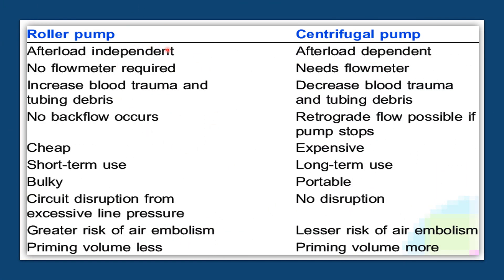Comparing roller pump and centrifuge pump: the roller pump is afterload independent, so circuit disruption occurs if there is excessive line pressure. It is an occlusive pump so no backflow occurs. Flow depends on revolutions per minute, so no flow meter is required. It is cheap and intended for short-term use.